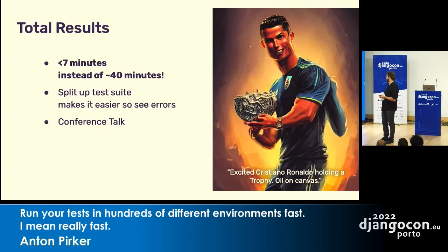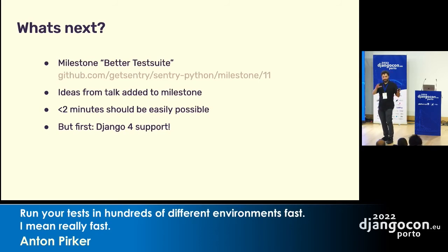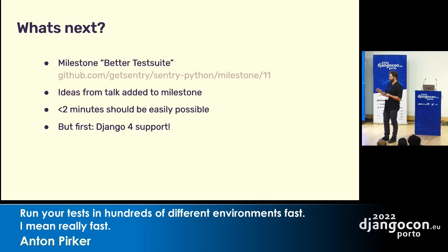So what's next? I have a milestone called 'Better Test Suite' in our project — you can check it out. All the ideas from this talk are filed as issues in that milestone, including the ones I didn't do yet. If you have ideas on how to make this even faster, just create an issue and put it in the milestone. I think getting under two minutes should be easily possible with more time. But first we'll focus on Django 4 support, because that's long overdue.